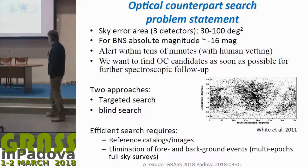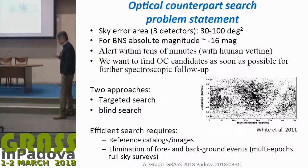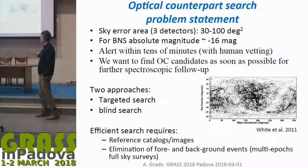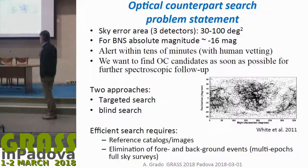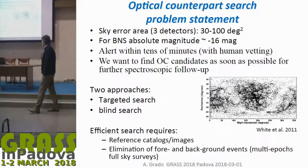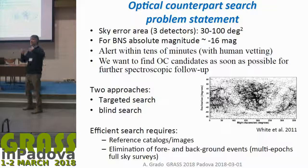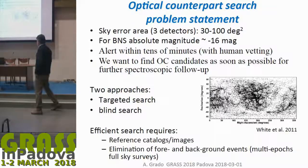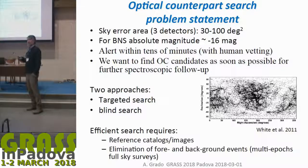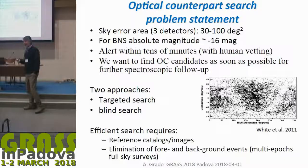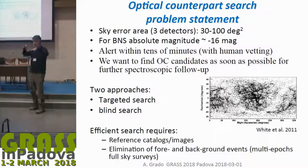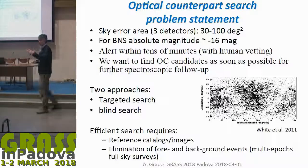We can use two approaches to search for the electromagnetic counterpart: a targeted search and a blind search. In both cases, we need an efficient reference catalog, or even better, reference images to compare against to see if a new source appears. It is also important to have the field characterized from a variability point of view — both photometrically and astrometrically — to remove known variable and moving objects, which are noise for our search.